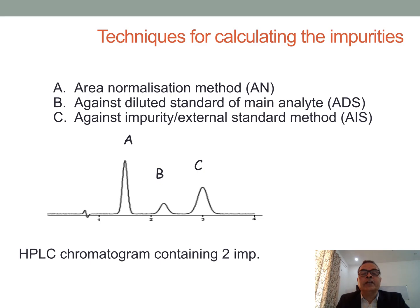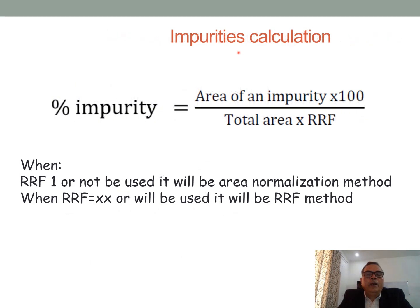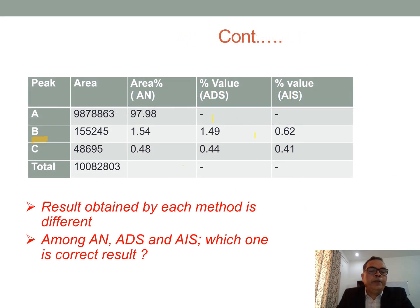Let us take an API containing impurity B and C. The question is how B and C will be calculated by the above methods. Impurities are calculated by the following formula: percentage of impurity equals area of an impurity multiplied by 100, divided by total area multiplied by RRF. In the case of the area normalization method, RRF is not used and is considered as 1. Impurity B and impurity C were calculated using the AN, ADS, and AIS methods.